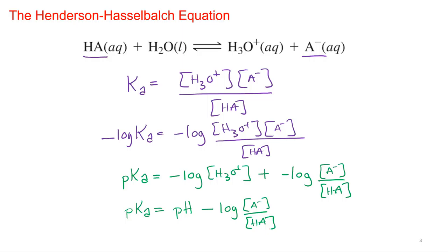And then one more quick little move, and I've got pH all by itself. I'll just add log of A minus over HA to both sides, right? And I'll probably do that up here.